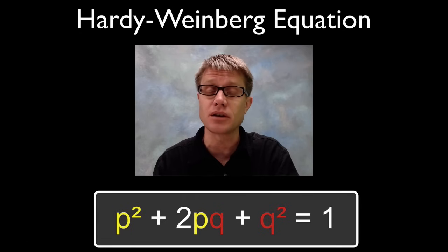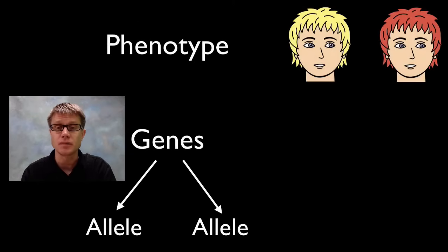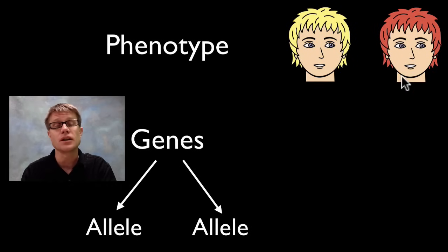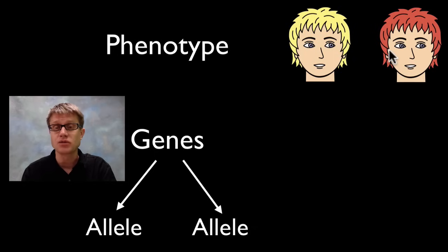Before we get to the equation, let's define a few terms. The first one is a phenotype. A phenotype is going to be the physical characteristics that an organism has. The only difference between these two individuals here is in the color of their hair — one has red hair and the other has non-red hair.